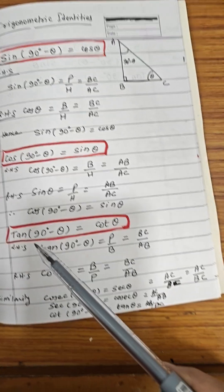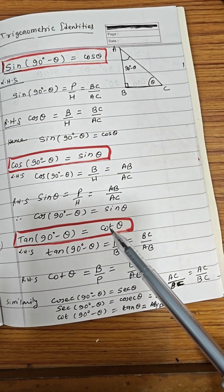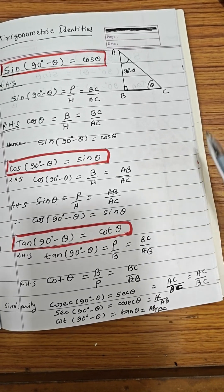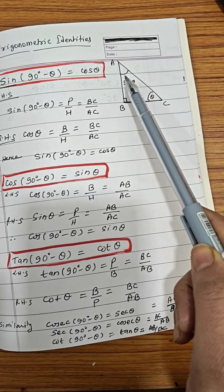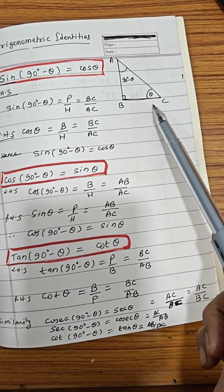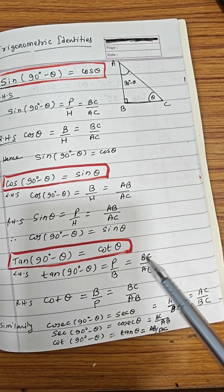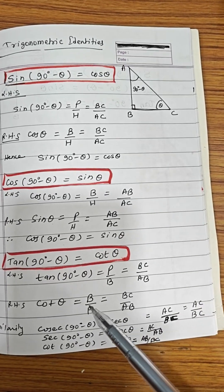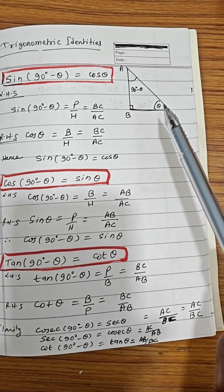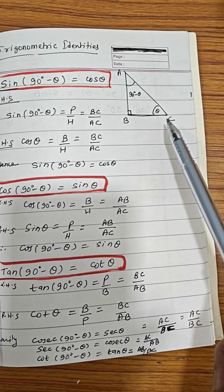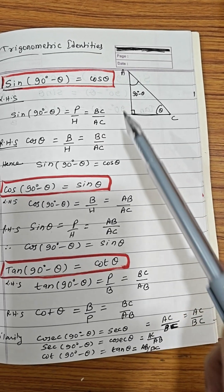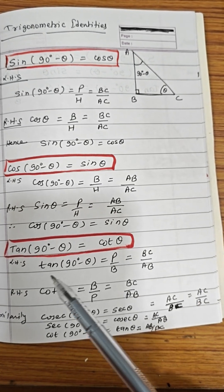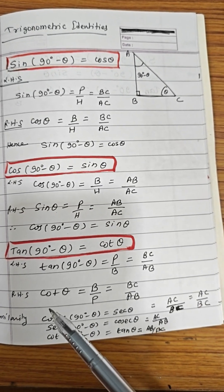Similarly, tan(90° - θ) = cot θ. The tan ratio is perpendicular upon base, so for angle 90° - θ, perpendicular is BC and base is AB, giving BC/AB. For cot θ, the ratio is base upon perpendicular, so for angle θ, base is BC and perpendicular is AB, giving BC/AB. You have seen that these two are the same, therefore tan(90° - θ) = cot θ.